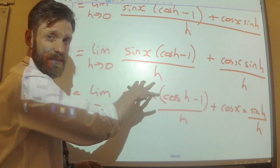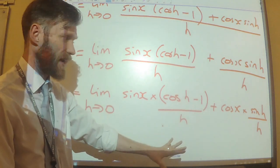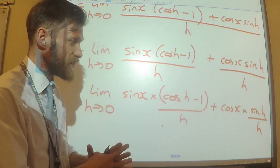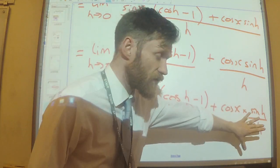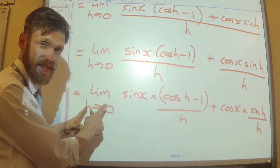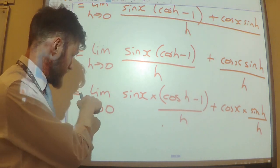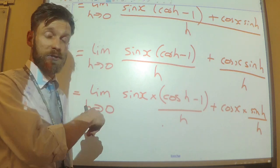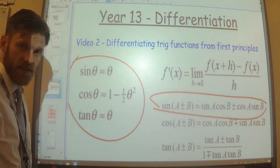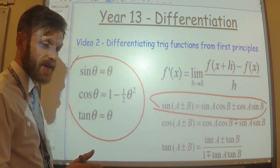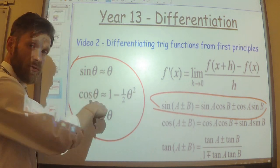These steps might seem like I've taken something relatively simple and made it look complicated. However, the whole point is I've now got my x terms separate, and I can just focus on the h's to apply the limit. I'm going to apply the limit where h tends towards 0 — so h becomes very small. That's where the small angle approximations come in, because when angles are very small and you're in radians, we can use these approximations.